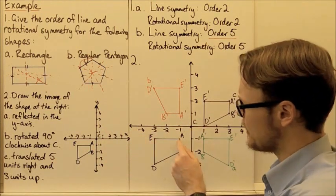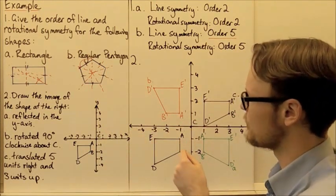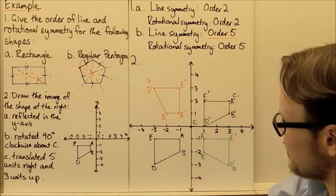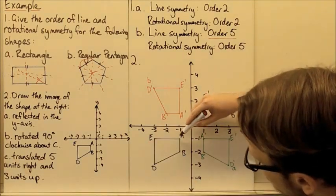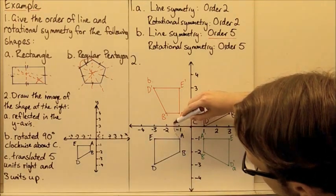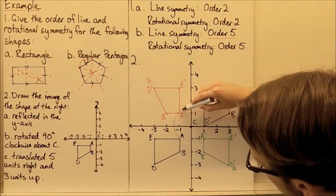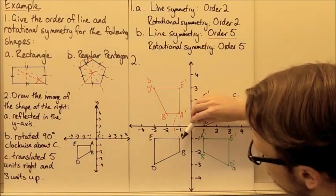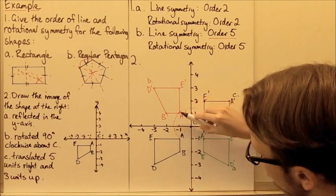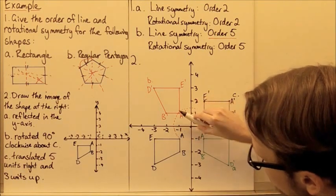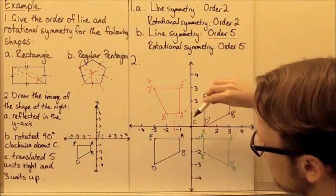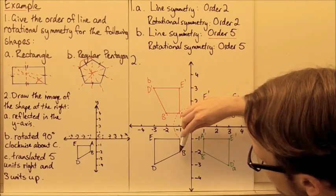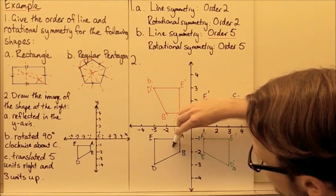Rotating through 90 degrees means we could draw a circle around point C and see how we're going to move the shape through 90 degrees — a 90 degree angle.